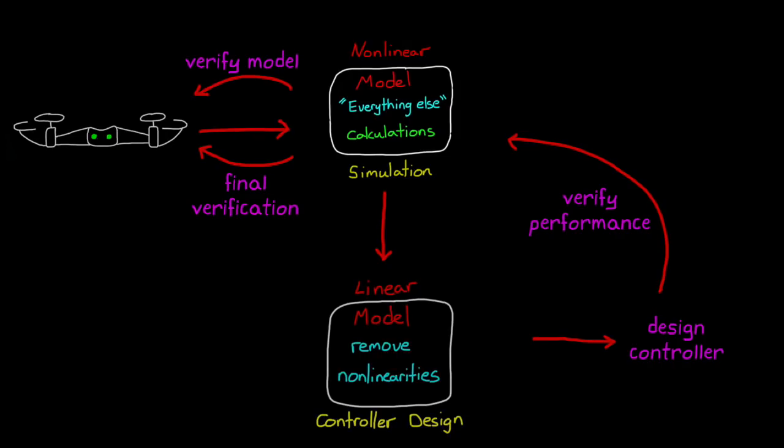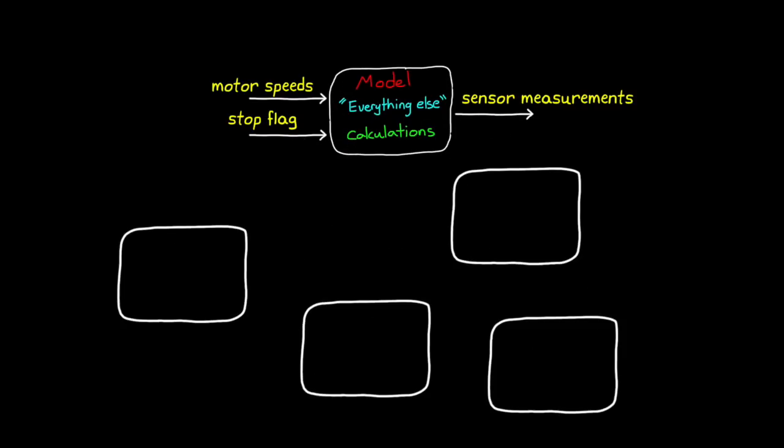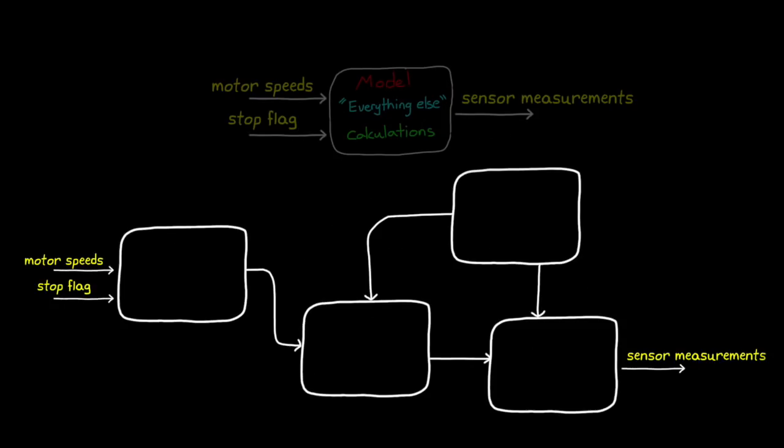So far I keep drawing a model as this single block. But rather than thinking about it as a monolithic set of calculations, it's generally easier to break it up into several smaller models that represent specific and discrete systems. For our mini-drone, we might break it up into the airframe structure,